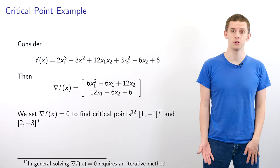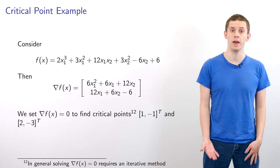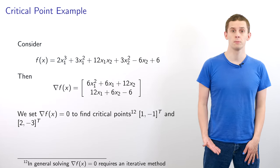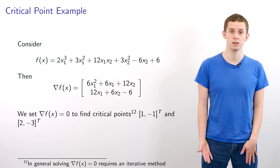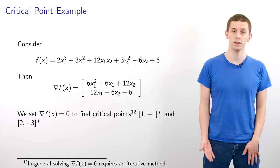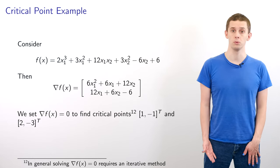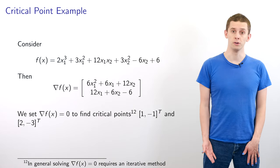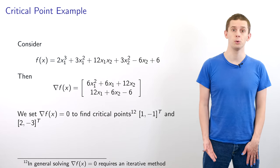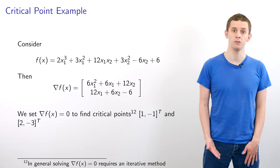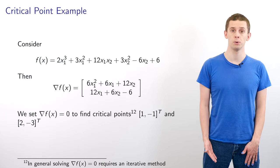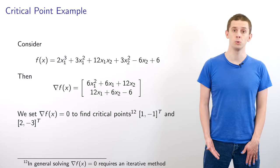To illustrate this, consider f(x) = 2x₁³ + 3x₁² + 12x₁x₂ + 3x₂² - 6x₂ + 6. The gradient has terms up to quadratic in x₁ and linear in x₂. Setting the gradient equal to zero, our gradient is simple enough to solve analytically, and we find two critical points at (1, -1) and (2, -3).